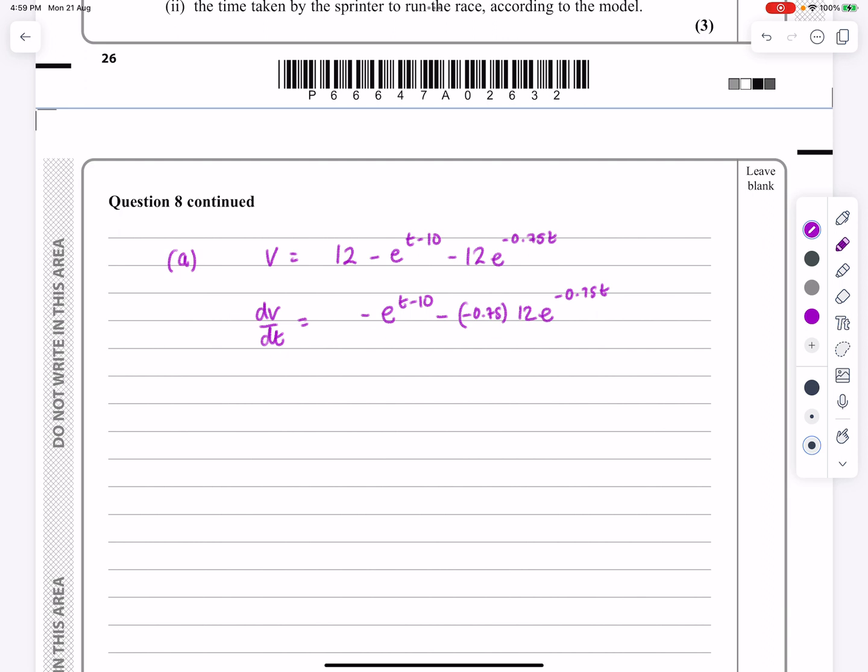It's not actually e to the t minus 10, it's minus e to the t minus 10. And then when we're doing the next bit, it's still going to be e to the minus 0.75t, but it's multiplied by minus 0.75. So I've got minus 0.75 times 12 e to the minus 0.75t. So that's dv by dt.